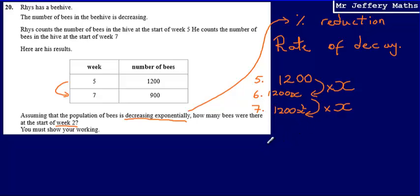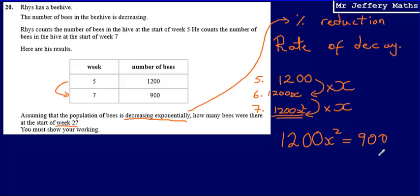So I have an algebraic expression to go from week 5 to week 7 by multiplying by the percentage multiplier twice. I can say that 1,200x² equals 900, because when I multiply 1,200 by the percentage multiplier twice, that gives me 900. What remains is to work out what x is — that is, the rate of decay.